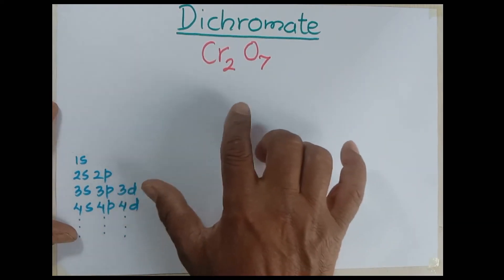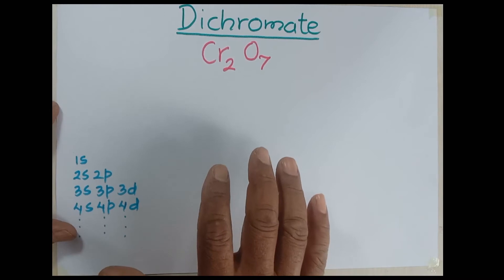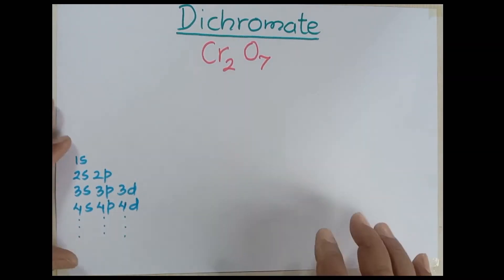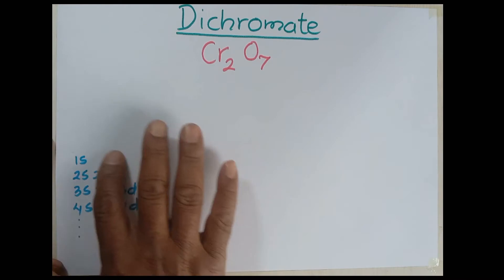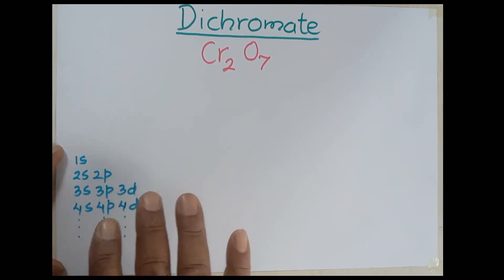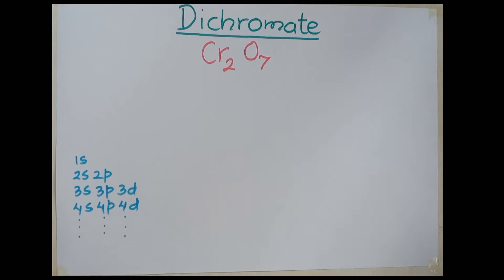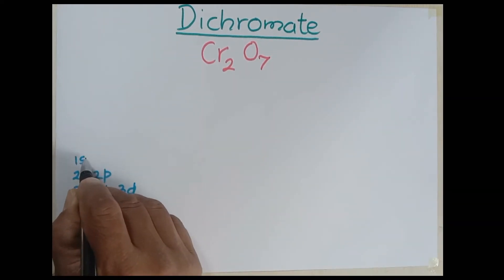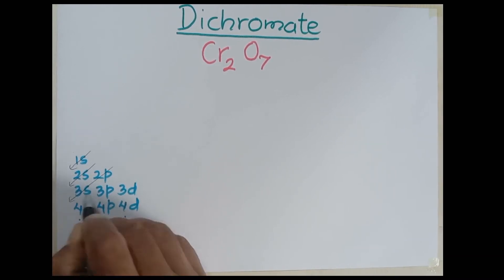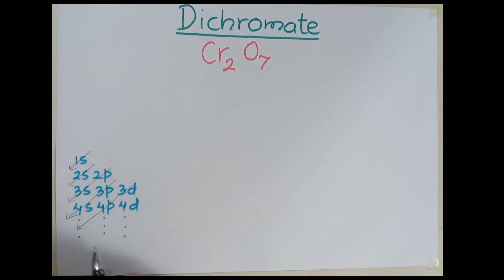I want to show you the Aufbau principle. According to this principle, we fill up the electrons in different sub-shells of different shells in this order. This is the order of filling up electrons. We need only this much, not more than that.